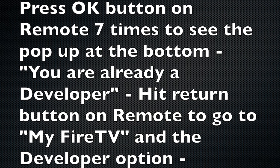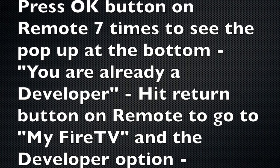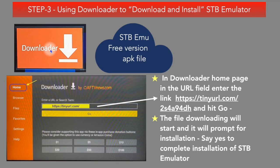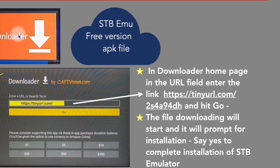When pressing the seventh time, you will see a pop-up at the bottom saying that you are already in developer mode. Hit the Return button, go back to My Fire TV, and you will see the Developer Options. Open Developer Options, open Install Unknown Apps, and set the Downloader toggle to On.